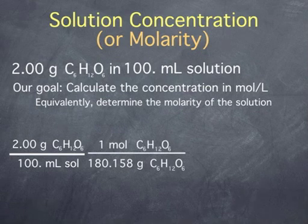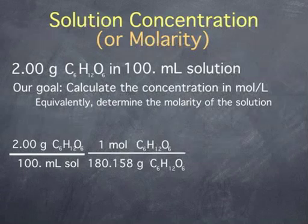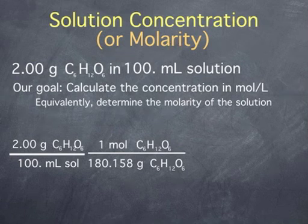We can now use this to convert from grams of glucose to moles of glucose by multiplying by 1 mole of glucose per 180.158 grams of glucose.